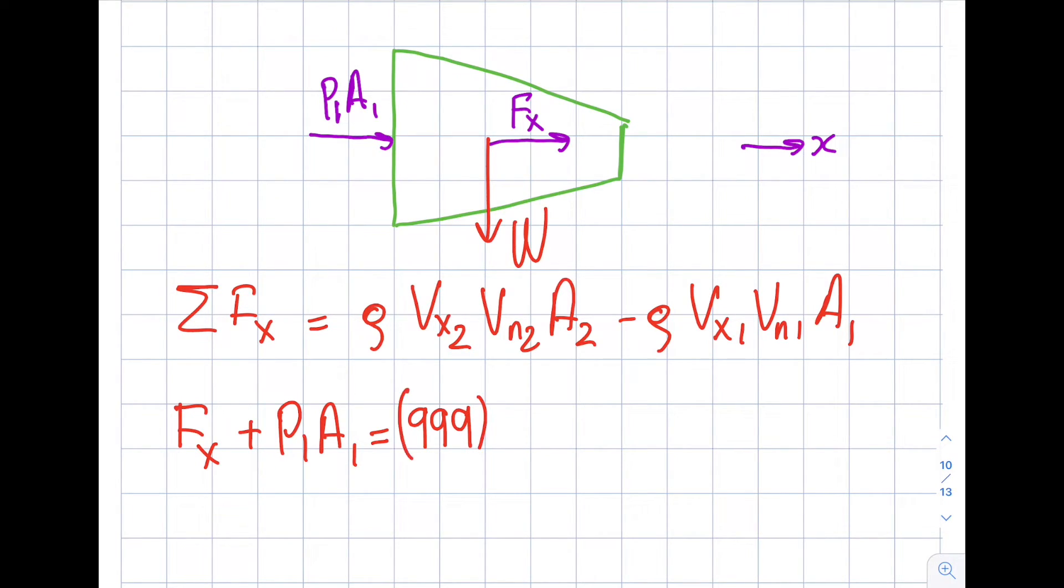Fx, which I'm after, plus P1 A1 will be equal to row, which is, I didn't give you that, I should, 999 kilogram per meter cube. Vx2, let's write it over here. This is the V2, this is the V1, V2, V1. You can see V2 is aligned with the x direction, so it's going to be the value itself, which is 32.